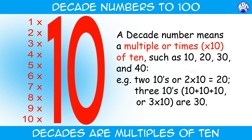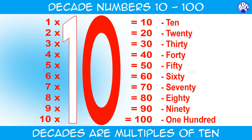A decade number means a multiple or times of 10, such as 10, 20, 30, and so on. Now let's learn the decade numbers from 10 to 100, which are very helpful in counting from 20 to 100.